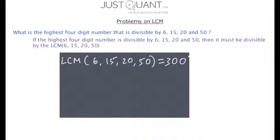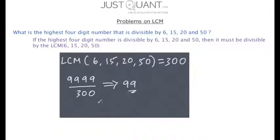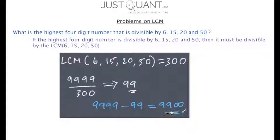Now the highest four-digit number is 9999. This when divided by 300 gives us a remainder of 99. Subtracting 99 from 9999 gives us a value which is divisible by the LCM of these four numbers, which implies that 9900 is the highest four-digit number that is divisible by 6, 15, 20 and 50.